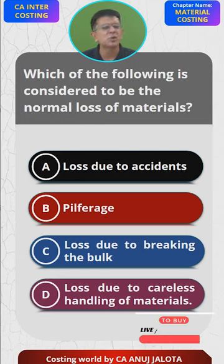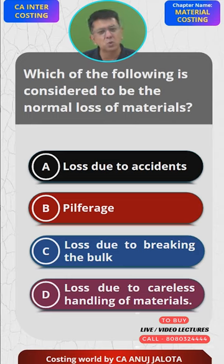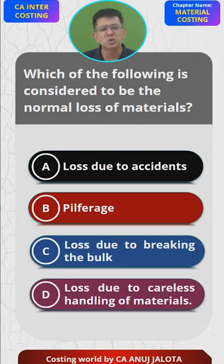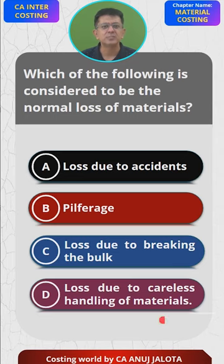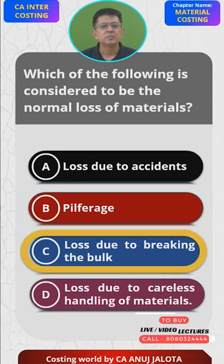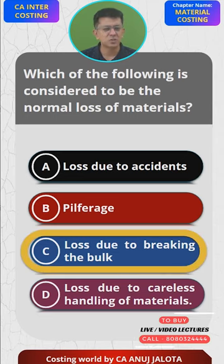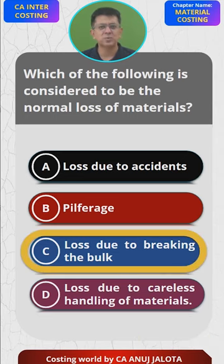Option D — loss due to careless handling — could be an answer if your workers are unskilled. But if your workers are reasonably competent, such losses should not typically occur. So it's more situational and less reliably predictable. Therefore, C is the correct answer. I'll see you all next time — all the best, bye.